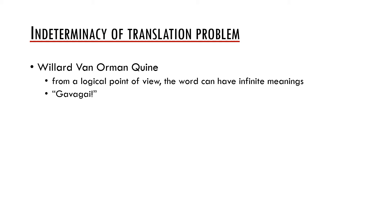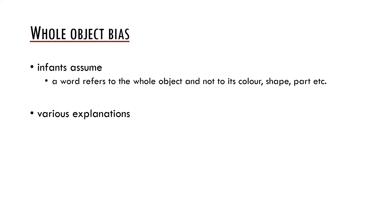This presents an interesting philosophical problem. However, from the point of view of language acquisition, it is important that children do not typically consider all logically possible meanings — they have a whole object bias. The whole object bias is the assumption that a word refers to a whole object and not to its other aspects such as its color, shape, or parts. This bias or tendency is very well established by various experiments.